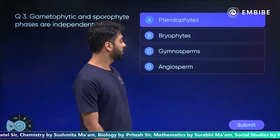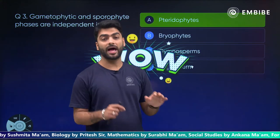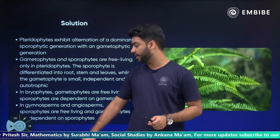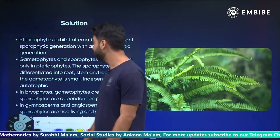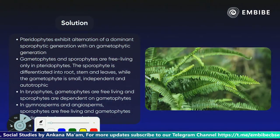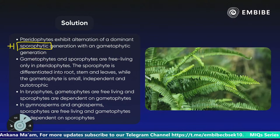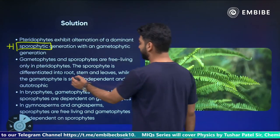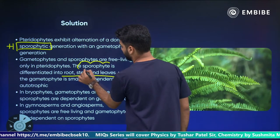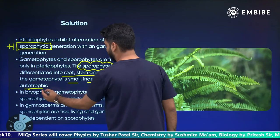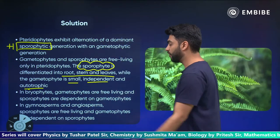You are saying pteridophytes — and you are absolutely right! It is pteridophytes, which are nothing but your ferns. They have an alternation of dominant sporophytic phase. In pteridophytes, the sporophyte is differentiated into root, stem and leaves, whereas in gametophytes, it is small, independent and autotrophic.